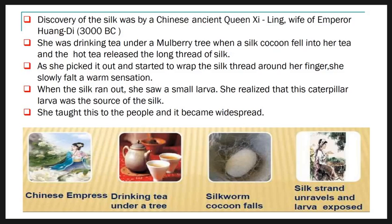She taught this to the people and it became widespread. However, the secret of silk-making was kept a closely guarded secret for centuries, and leakage of the secret was punishable by death. Because of this, silk was sold by the Chinese weight for weight in gold.